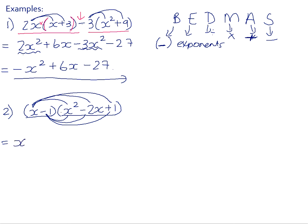x times x squared is x cubed. x times negative 2x is negative 2x squared. x times positive 1 is positive x. Negative 1 times x squared is negative x squared. Negative 1 times negative 2x is positive 2x. Negative 1 times positive 1 is negative 1.